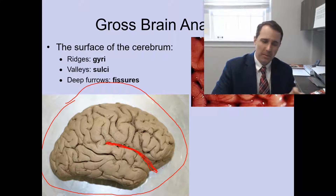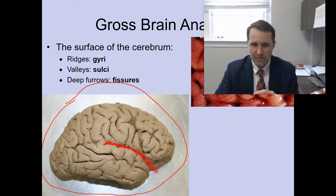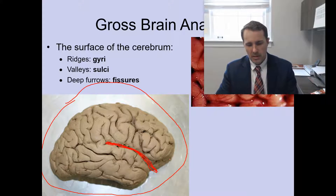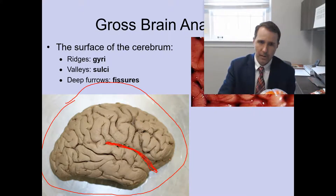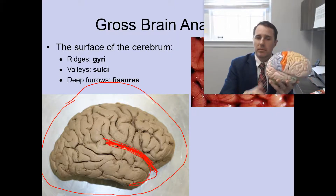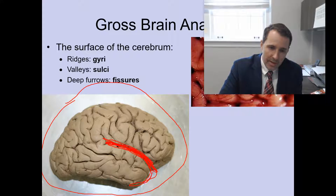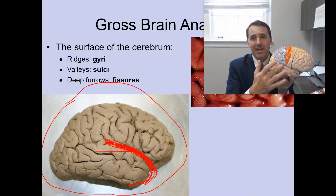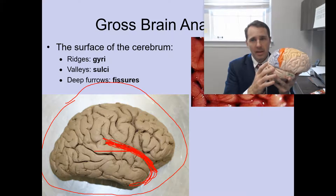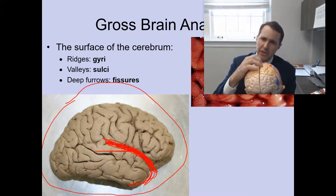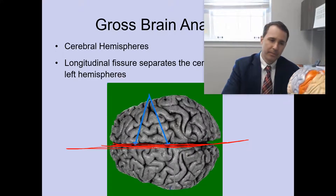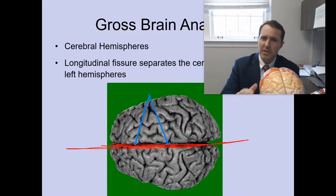Aside from the gyri and the sulci, you have some deeper divisions within the surface of the brain that divides the brain into different sections. You have this deep sulcus known as the lateral sulcus, also known as the sylvian fissure. And there is a deep fissure that runs front to back in the brain, known as the longitudinal fissure, which divides the brain into left and right cerebral hemispheres.